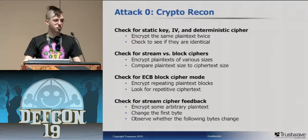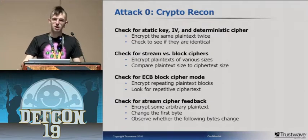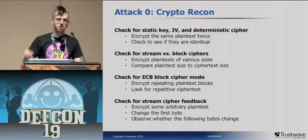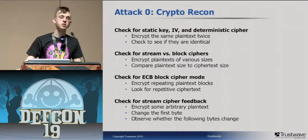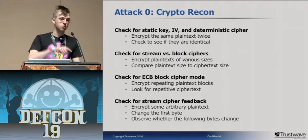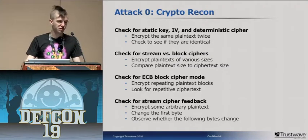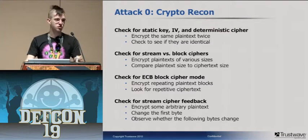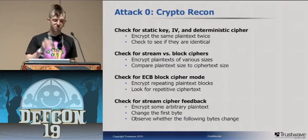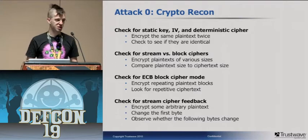You can also check for stream cipher feedback. When working with a stream cipher, sometimes the encryption of a particular bit — whether or not it gets flipped — is dependent on earlier bits in the plaintext or ciphertext. To check for that, encrypt some plaintext and then modify the beginning of it and see if the rest gets corrupted.